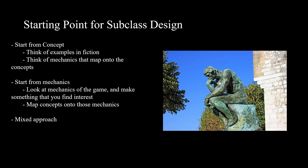Another way you could start is from mechanics. You can look at a mechanic from 5e and build something you find interesting. One recent example — we see it in Tasha's — is the idea of pet subclasses. Once you have the idea of a pet that uses a bonus action to attack every turn with some special ability, you start asking which classes don't use their bonus actions much, and how you can build a pet that makes the class more interesting. Then you map concepts onto those mechanics.